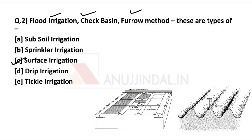What does surface irrigation mean? In very simple terms, if we need to classify the flooding of land with water, it is just by gravity — or we could say it is a kind of uncontrolled flooding — that is known as surface irrigation. Now there are different methods because we cannot always use uncontrolled flooding; we need to check or control the flow of water. The different methods are flood irrigation, check basin, and furrow method.